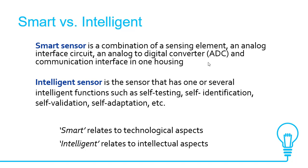A smart sensor is a combination of a sensing element, an analog interface circuit, an analog-to-digital converter (ADC), and a communication interface in one housing. An intelligent sensor is one that has one or several intelligent functions such as self-testing, self-identification, self-validation, and self-adaptation, etc. So smart relates to technological aspects, whereas intelligence relates to intellectual aspects.